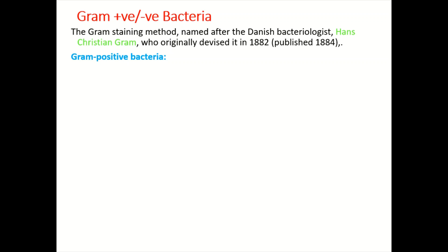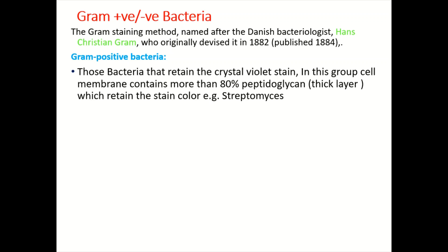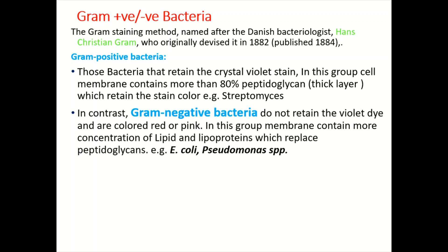Gram positive bacteria are the bacteria which retain the crystal violet stain. In this group, the cell membrane contains more than 80 percent peptidoglycan, meaning there is a thick layer of peptidoglycan which retains the color. For example, Streptomyces retains the color of the crystal violet stain and is an example of gram positive bacteria.